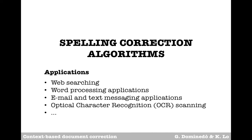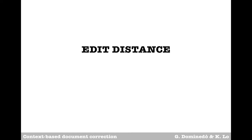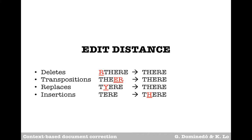Correction algorithms play an important role in numerous modern applications and vary widely in complexity. Many utilize the concept of edit distance — the number of edits it takes to turn one word into another. For a given word, any single edit can be represented by deleting a letter, the swapping of adjacent letters, the changing of a letter, or the addition of one to the word.